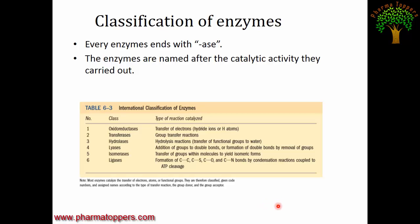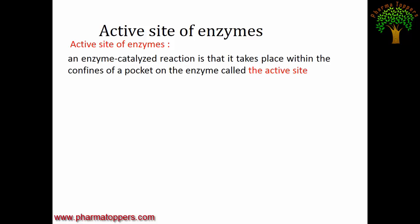For example, pyruvate dehydrogenase is an enzyme that dehydrogenates pyruvate. The group donor is pyruvate, which is why it is named pyruvate dehydrogenase. Enzymes are named according to the transfer reaction, the group donor, and the group acceptor.